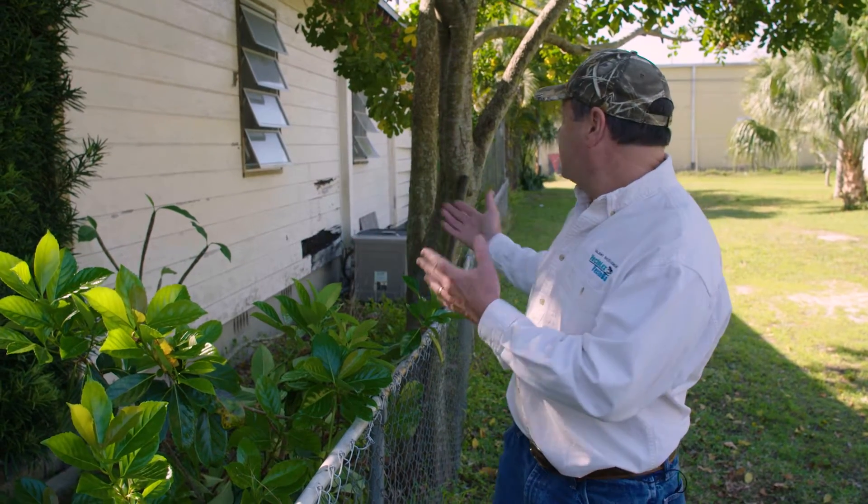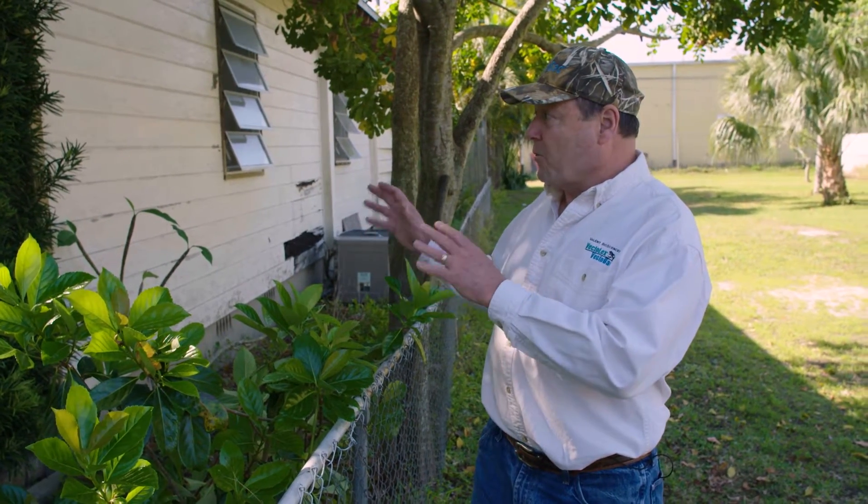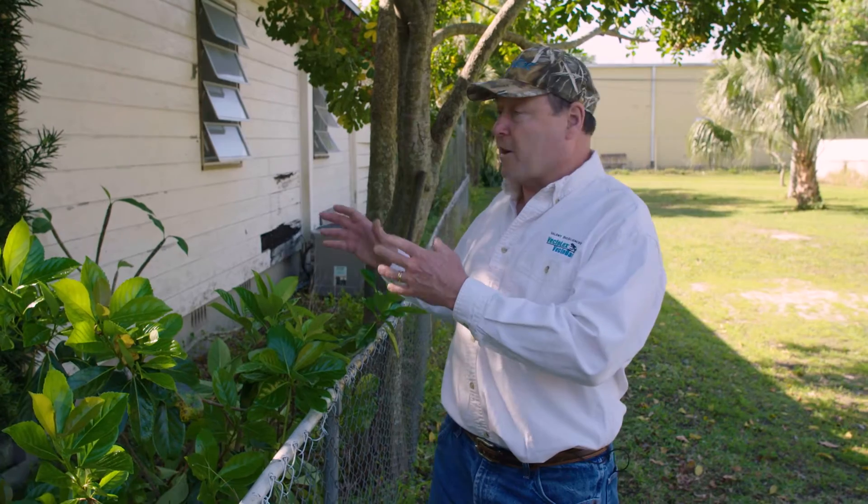Looking at the extent of vegetation and visible habitats on this property, we would consider everything except the house to be habitat on this property. So looking at the size of the property and the size of the house, just a rough estimate would be that this is approximately 75 percent habitat.